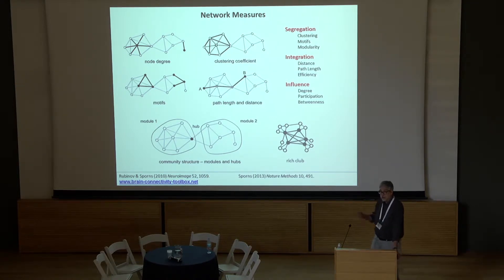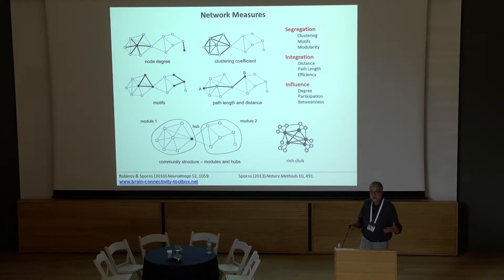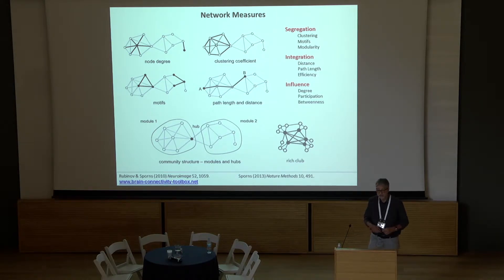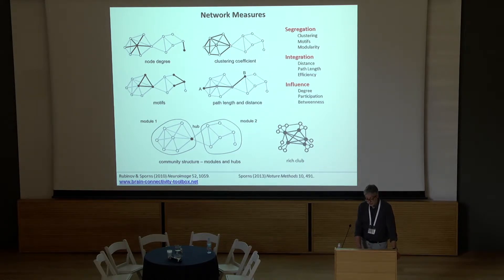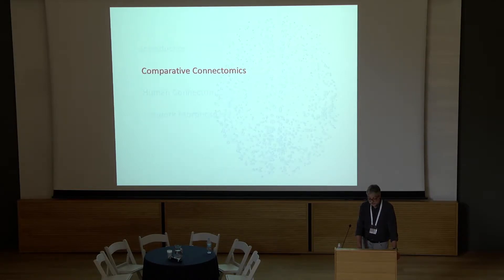Building on that, a higher-order concept is the rich club — the interaction of highly connected nodes with each other. In many biological networks we find that these types of connectivity exist, and they are particularly important in the brain. I'll be using these terms and measures throughout the rest of my talk.